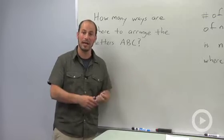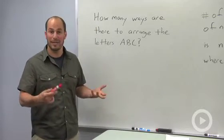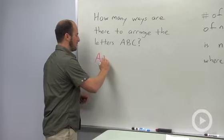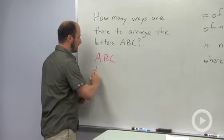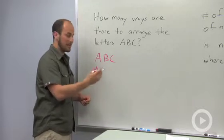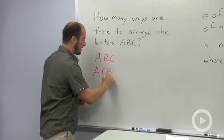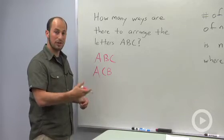I want to start out by just writing them out. We could have ABC. Keeping our A first and then switching our B and our C, we have ACB. There's no other way we can do A first.